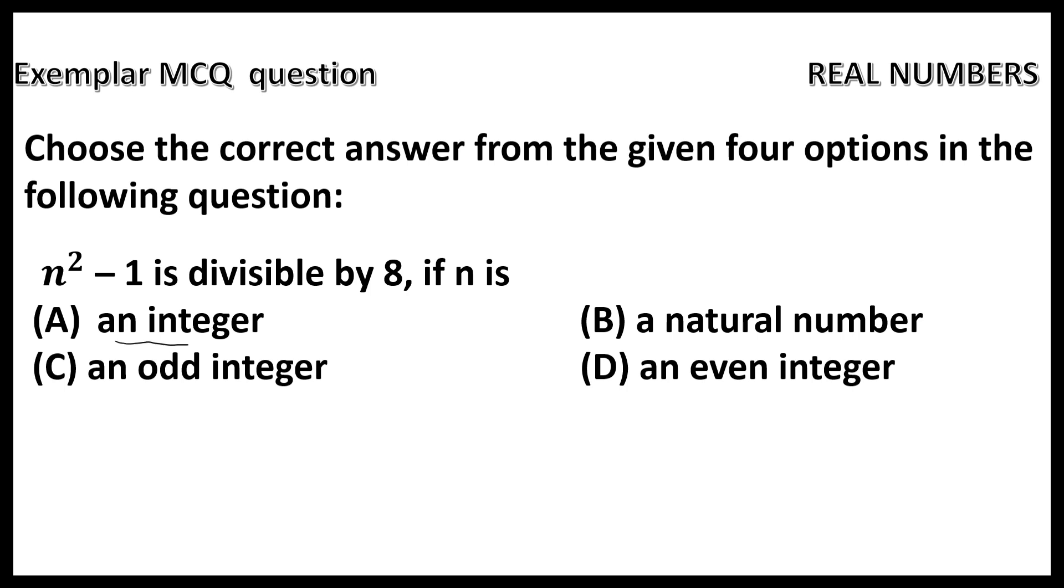Here you can observe every integer is either an odd number or an even number. Natural number also, it can be odd integer or even integer. So now let us concentrate on only these two options, option C and option D.